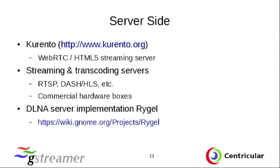Not only on the client side but also on the server side, lots of products are built on it. For example, there's Kaltura, which is some kind of WebRTC and HTML5-based streaming server — really huge enterprise-level stuff. Somewhere in it, GStreamer handles the actual media and network handling. It's also used in all kinds of streaming and transcoding servers — for example, the Rygel DLNA server is implemented with GStreamer. There are also commercial hardware boxes out there that use it internally.